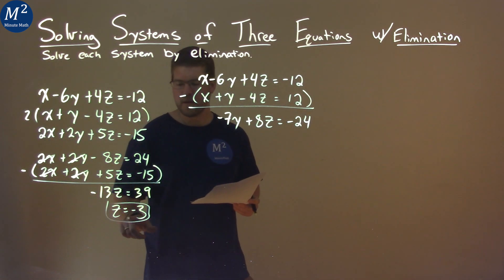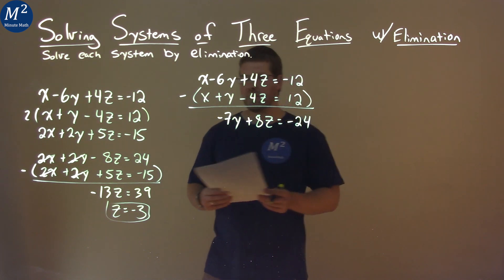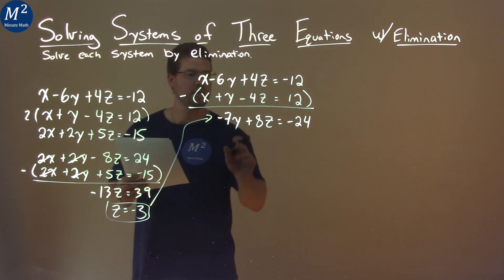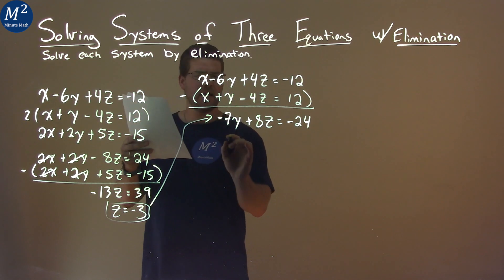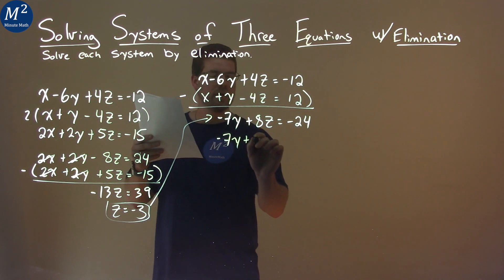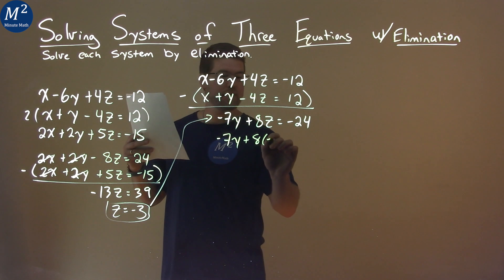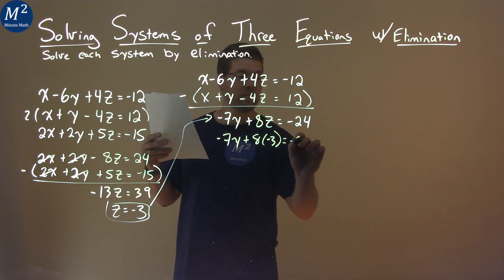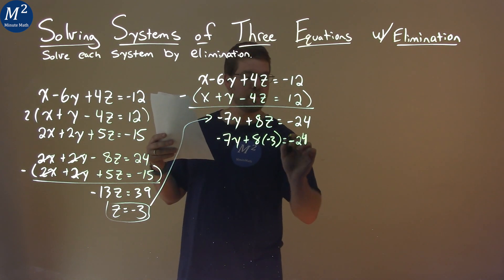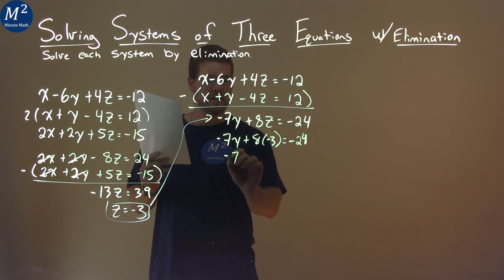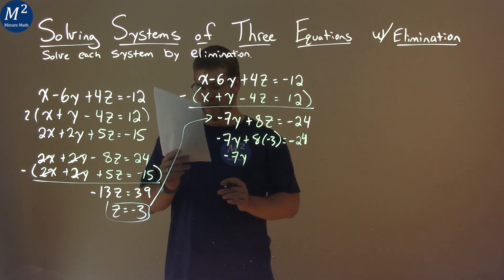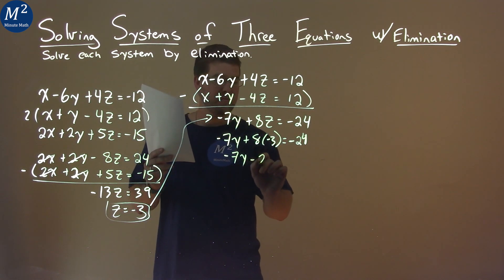Well look at this. Z is negative 3. If we plug it into this equation right here for that z, we get y by itself, or we can get y by itself. So let's do that. Negative 7y plus 8 times negative 3 equals negative 24. Now let's keep going from here.